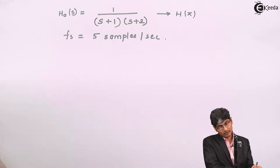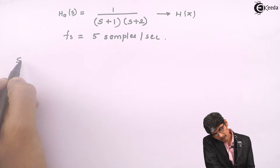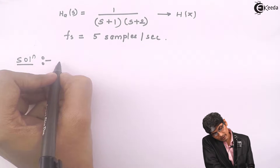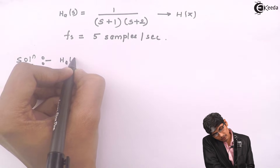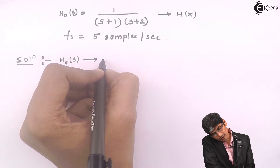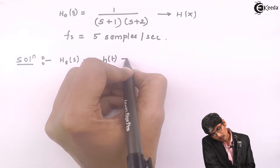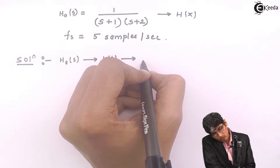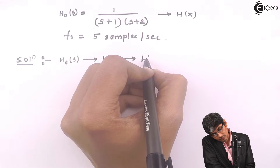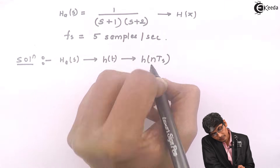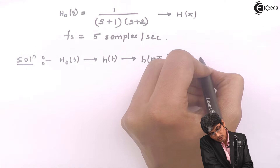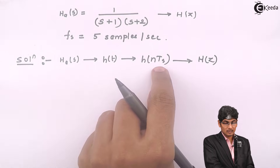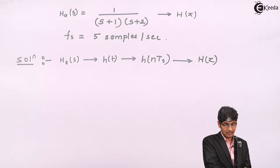For the impulse invariance method, let us start the solution. I will begin with H_A(S), from that find H(T), then do sampling to get H(NTs), and then go to H(Z). While solving the problem, you will skip one intermediate step, and we will see how.